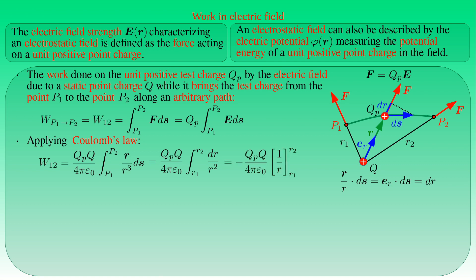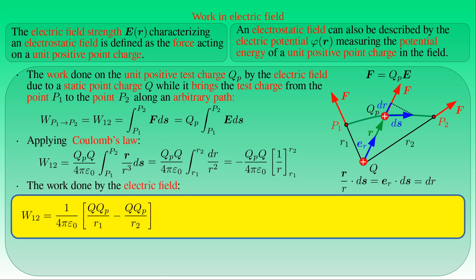Performing the integration gives the primitive function −1/R evaluated at R1 and R2, so the work done by the electric field equals (1/4πε₀) times the difference between Q·QP/R1 and Q·QP/R2. Since R1 and R2 are the distances between Q and the points P1 and P2, the work computed depends only on the positions of P1 and P2 with respect to the point charge Q.